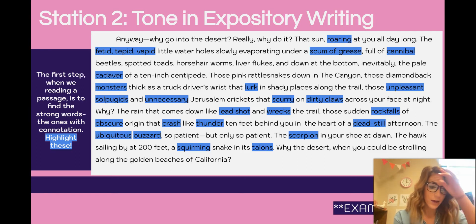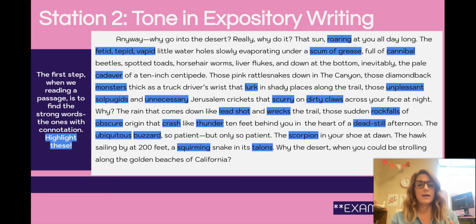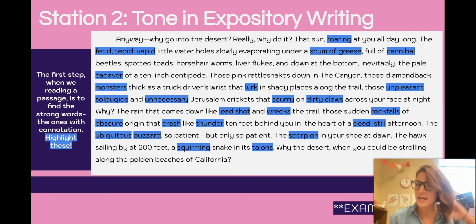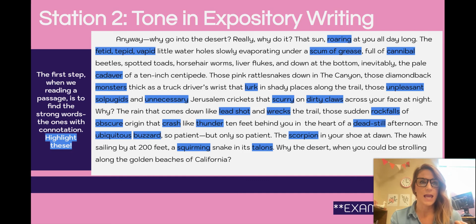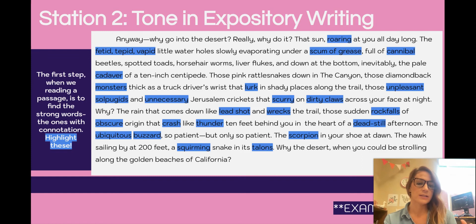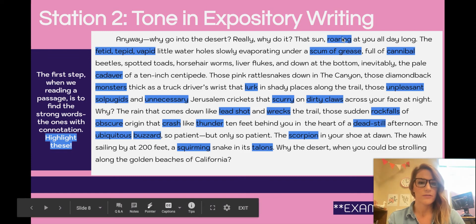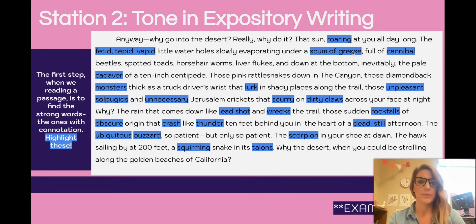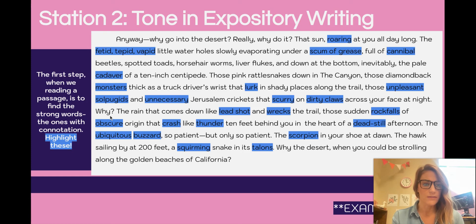Besides the fact that since I grew up in the desert, I am extremely offended by this writing. The first thing we want to do is look at the word choice — we want to zoom in on words that have connotation. Connotation means a strong word, a word that has a lot of feeling behind it, whether that feeling is positive or negative. I've gone through and highlighted those words in blue: roaring, fetid, tepid, vapid, scum of grease, cannibal, cadaver, monsters — all words that have a lot of feeling behind them.